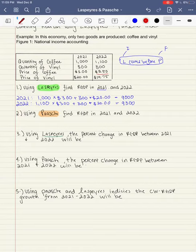So next we're going to do Paasche index. So remember Paasche is going to be final prices. So that just means that when calculating 2021 and 2022, we're only going to use 2022 prices. Okay.